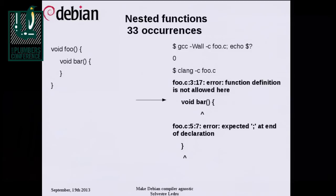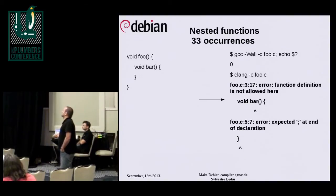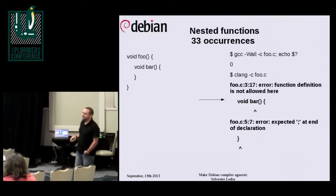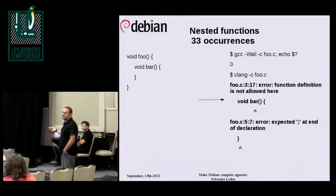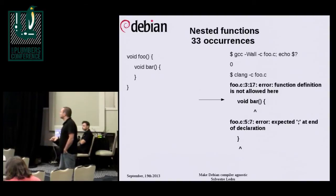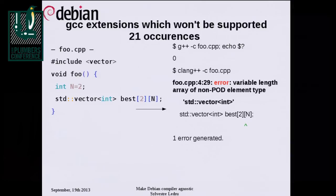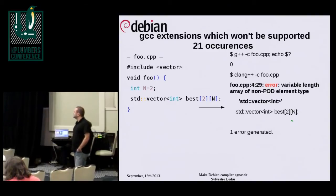We have nested functions — a GCC extension — 33 times in the archive. Clang considers that an error; GCC is very happy with it. Some of the packages using this are very important for every Linux distribution, and we discussed that this morning. Clang won't fix this — it's a GCC extension.